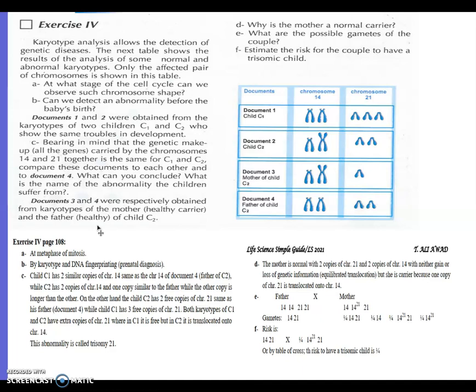Documents 1 and 2 were obtained from the karyotypes of two children, C1 and C2, who showed the same troubles in development. This is a keyword: C1 and C2 have the same troubles of development, they have the same problem. Bearing in mind that the genetic makeup, all genes carried by chromosomes 14 and 21 together, forget other chromosomes, only take into consideration 14 with 21 together.